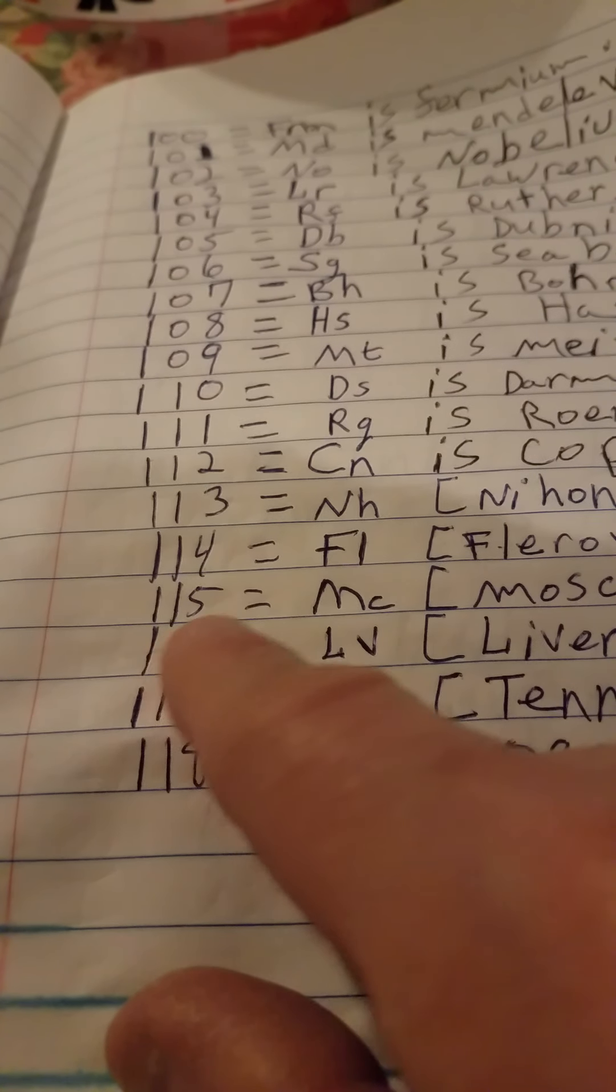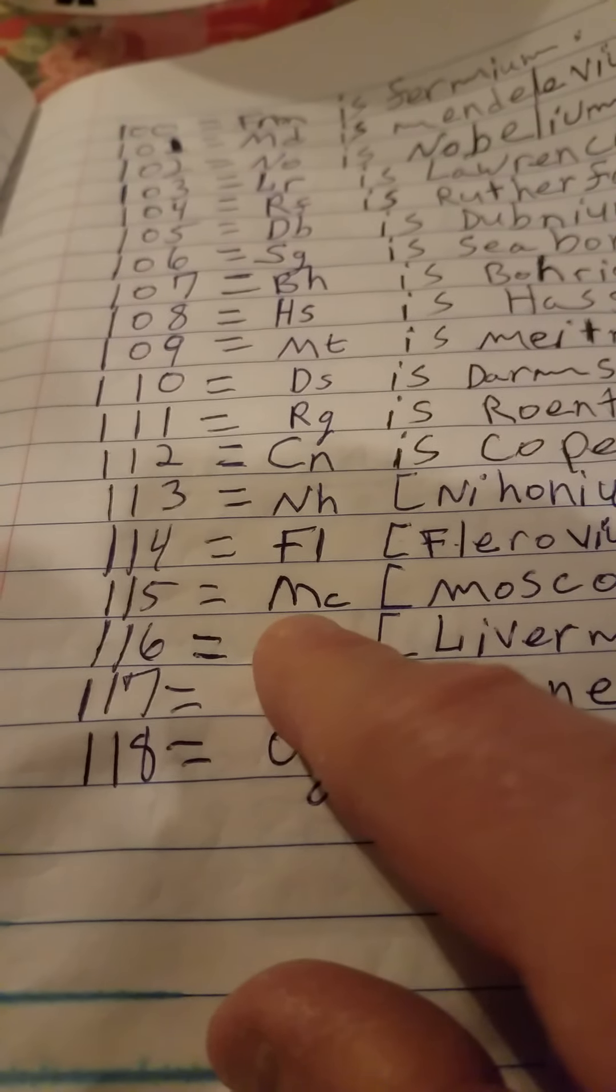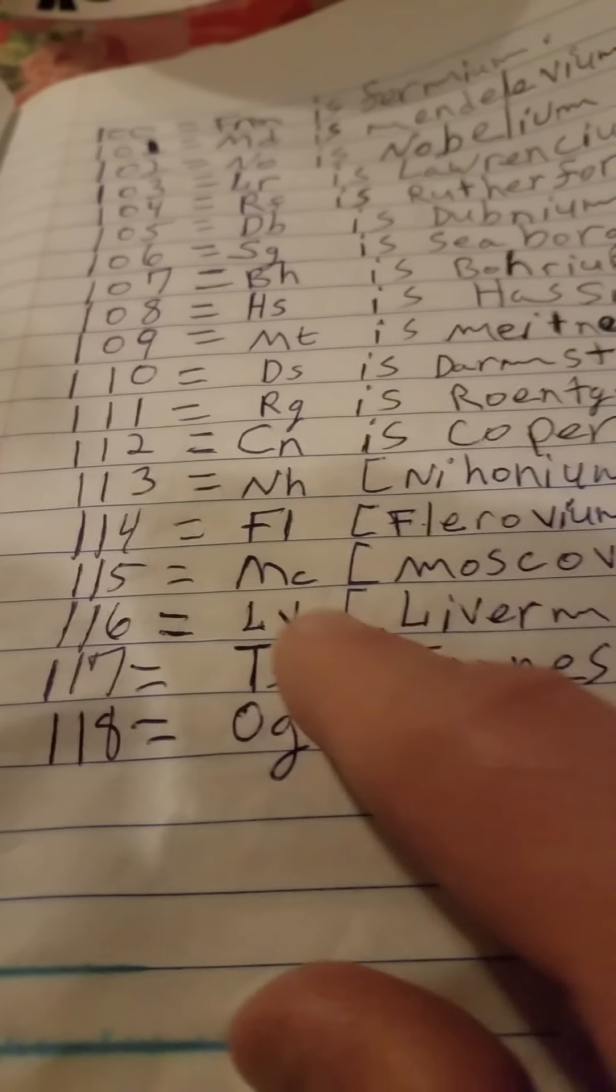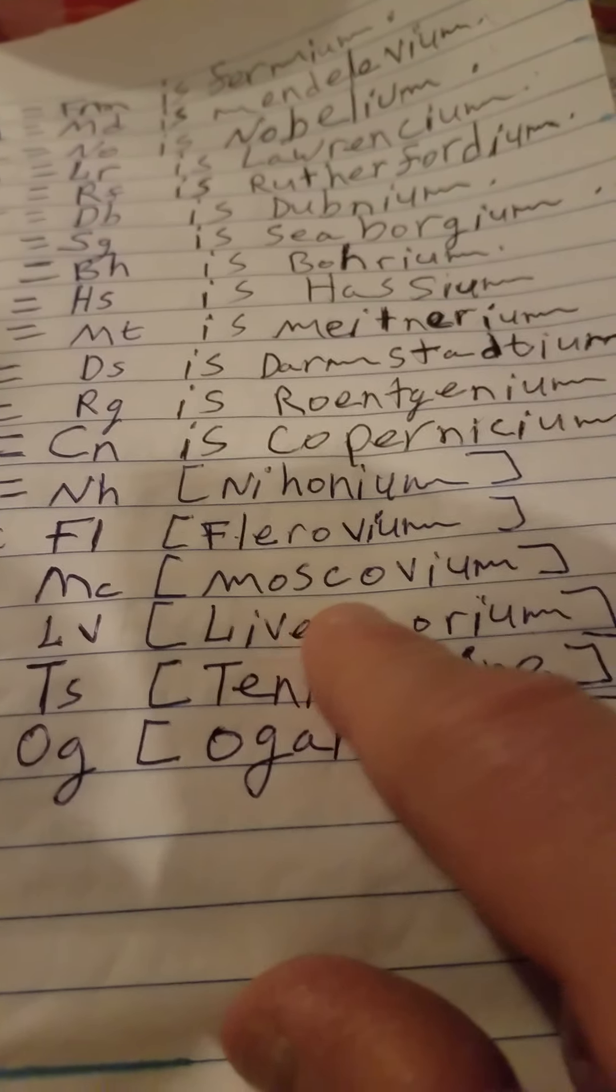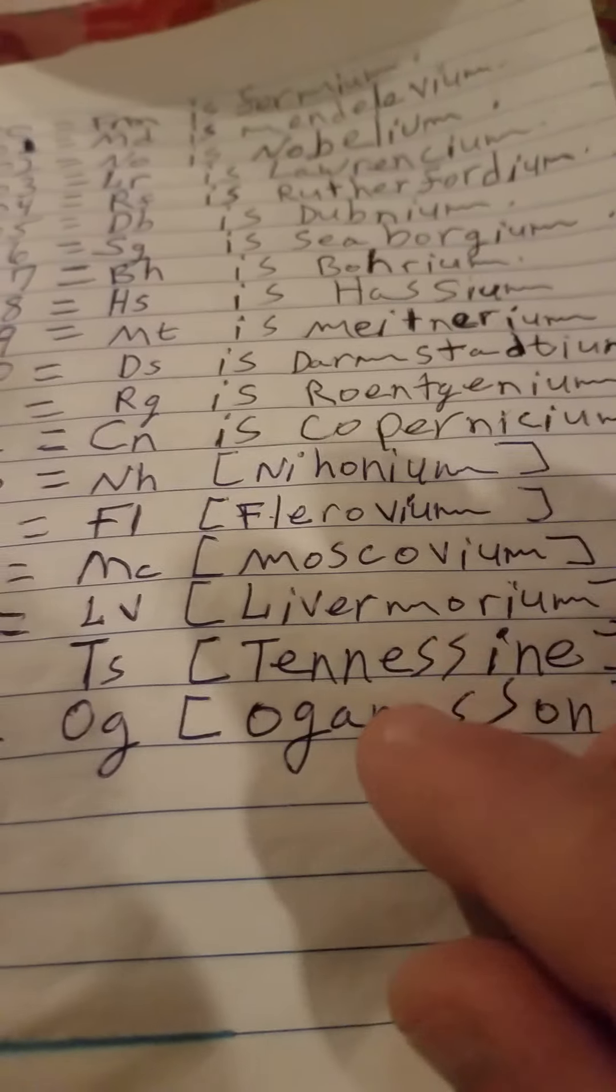Then you got 115, which is capital M and a small C, for Moscovium, Moscow. It was created in Moscow or started in Moscow - the element was discovered there.